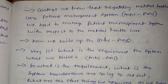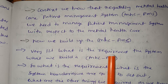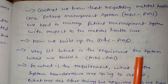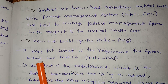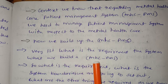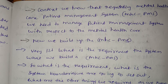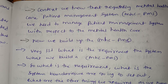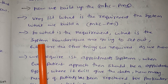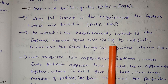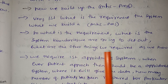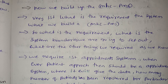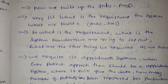Now, what are the requirements of the MHC PMS — the Mental Health Care Patient Management System? We need to set out the system boundaries and identify what other things are required. We need to define the system boundaries and the additional components needed.